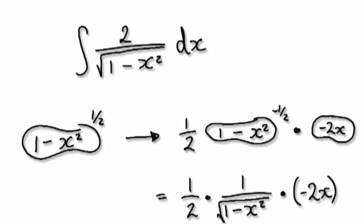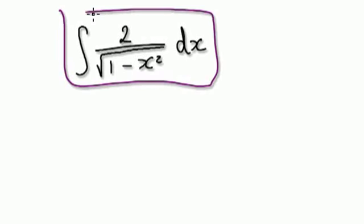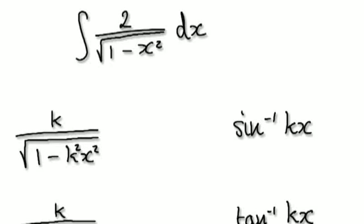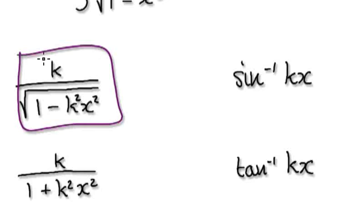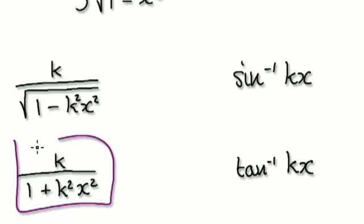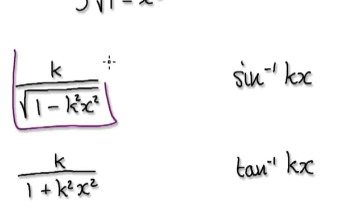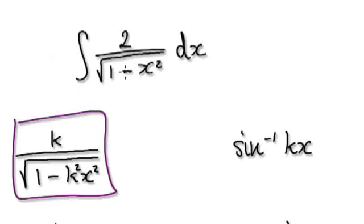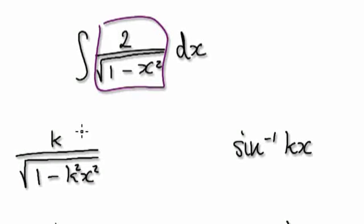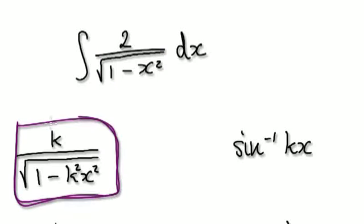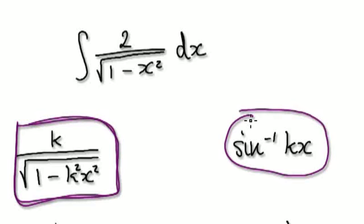So when you come to try and find the indefinite integral of this, keep an eye out for these two forms. Keep an eye out for something of this form or something of this form. Because if something is of this form here, it's in a way very similar to this. If it's in this form here, then your guess should be this.